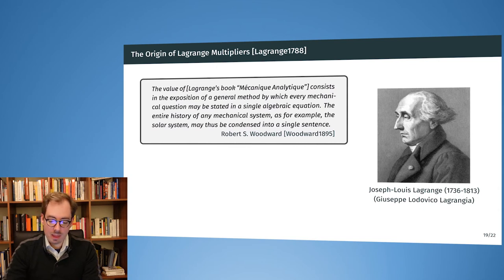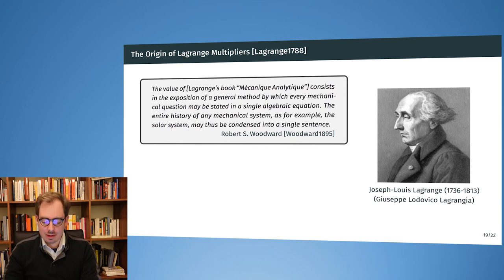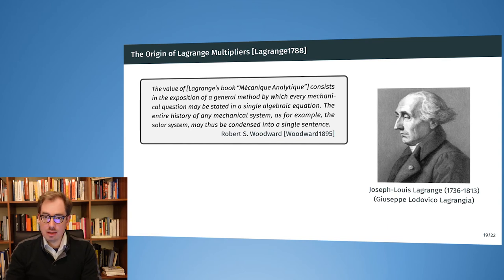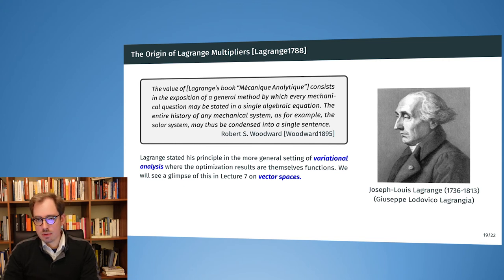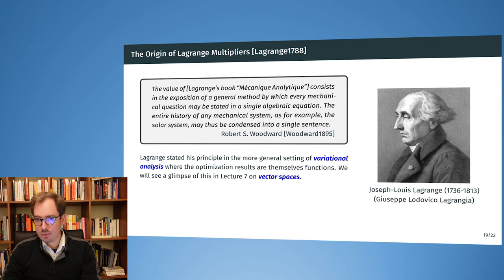Lagrange really cracked a very hard problem. With his Lagrange multipliers, he was interested in the movement of the stars — similar to how we condense all equality constraints into one single equation, he could do that for mechanical systems and the solar system, expressing everything in a single equation. And people were really smart at the time, not only today.